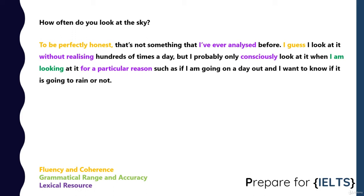When you're looking at something but don't think you're looking at it, you don't realize you're looking at it. 'To consciously look at something' means to look at it and know you are looking at it. So that's what I mean by consciously looking at it for a particular reason, such as checking whether it's going to rain before going out.